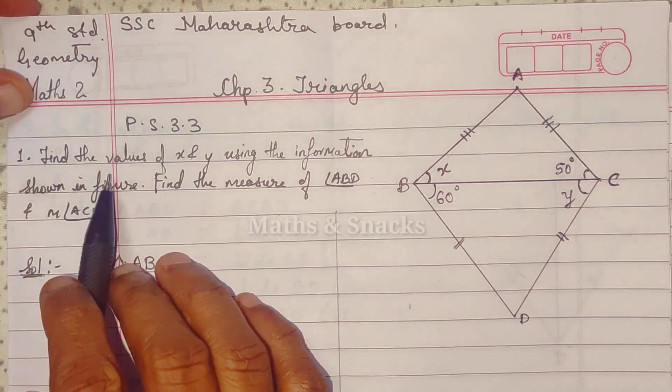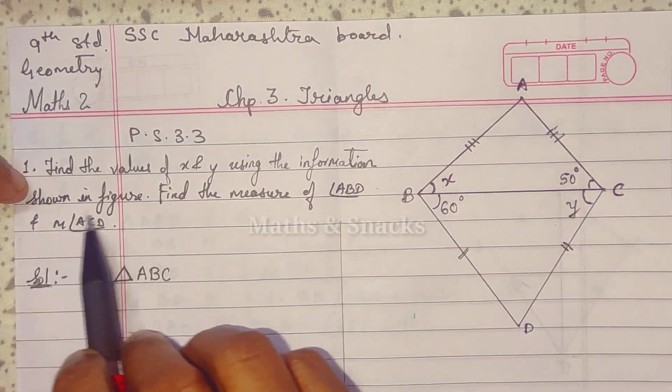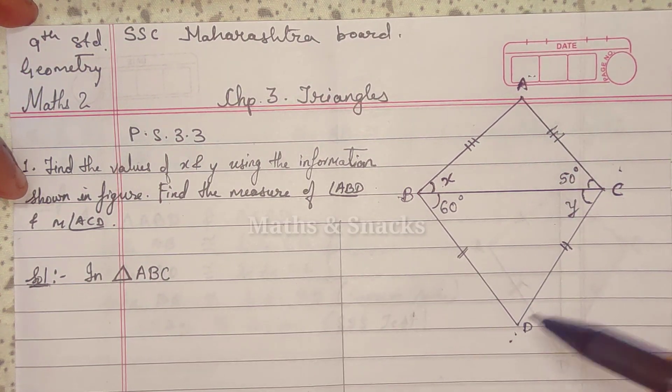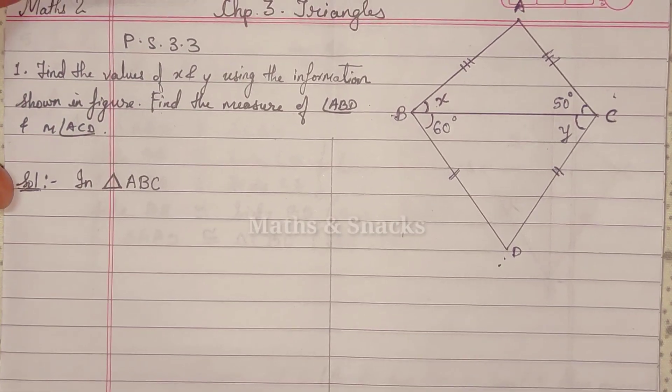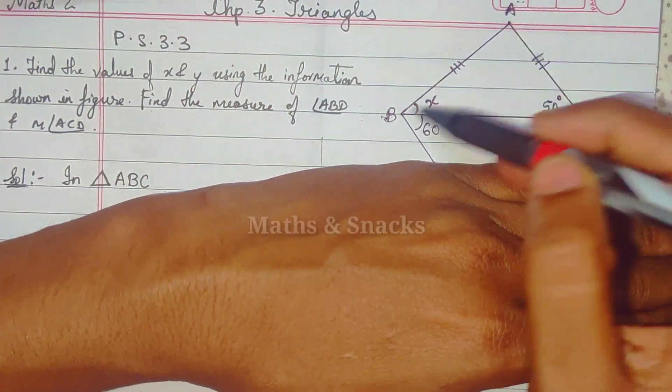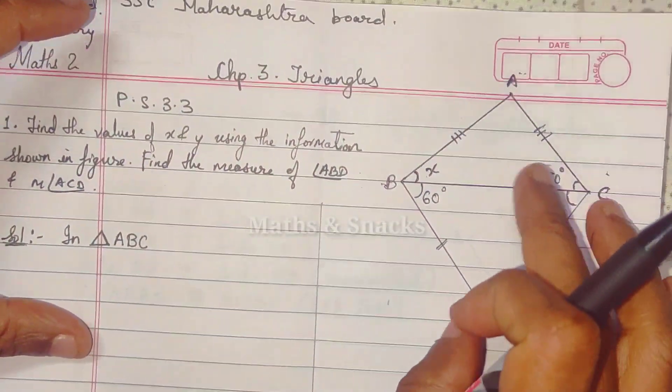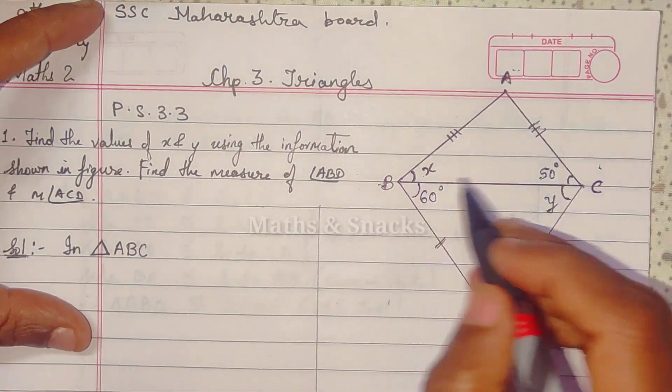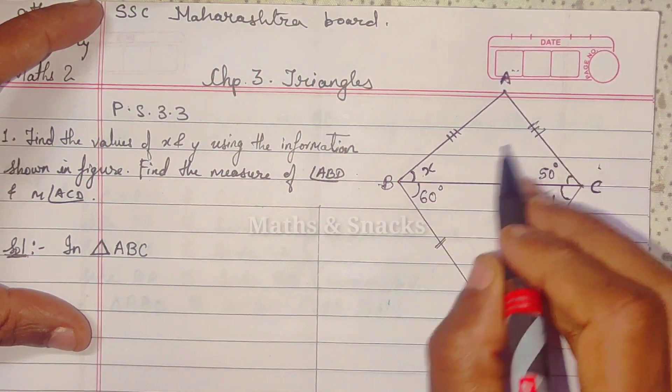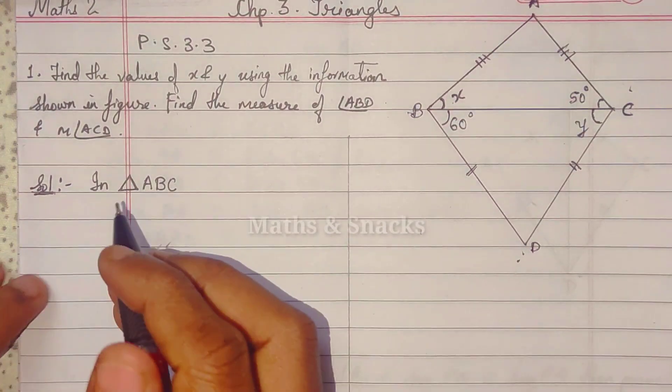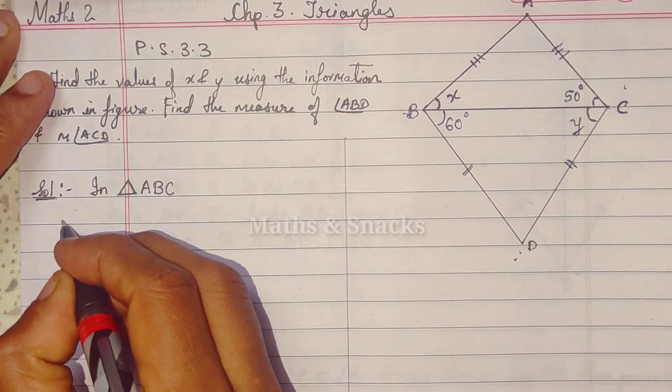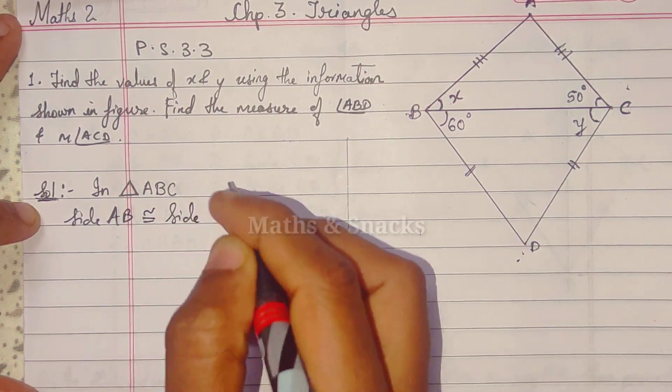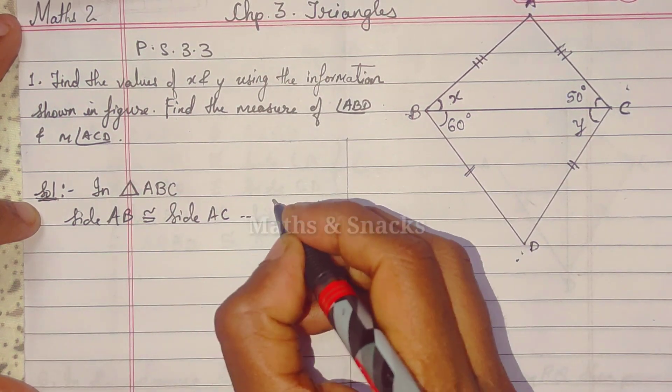Now, find the value of x and y using the information shown in the figure. Find the measure of angle ABD and angle ACD. So now, let us see. If you observe only one triangle, triangle ABC, you will get that both these standing sides are equal. So that means angles opposite to them are congruent, meaning if this is 50 degrees, then x is also 50 degrees. So indirectly we got the measure. So here we will write that in triangle ABC, side AB is congruent to side AC. Okay? This symbol is given.